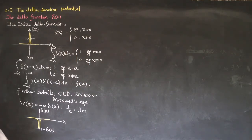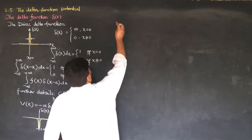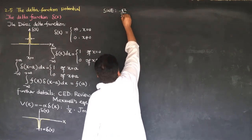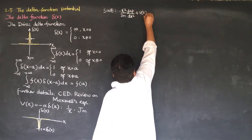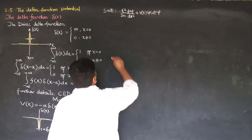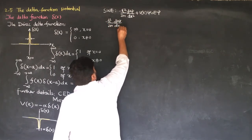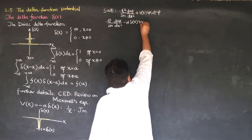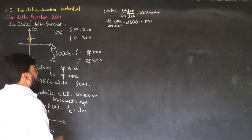Now we solve the Schrödinger wave equation: −(ℏ²/2m)(d²ψ/dx²) + V(x)ψ = Eψ. Substituting V(x) = −α·δ(x), this becomes −(ℏ²/2m)(d²ψ/dx²) − α·δ(x)·ψ = Eψ. For the delta function potential we solve the Schrödinger wave equation separately for bound states and for scattering states.